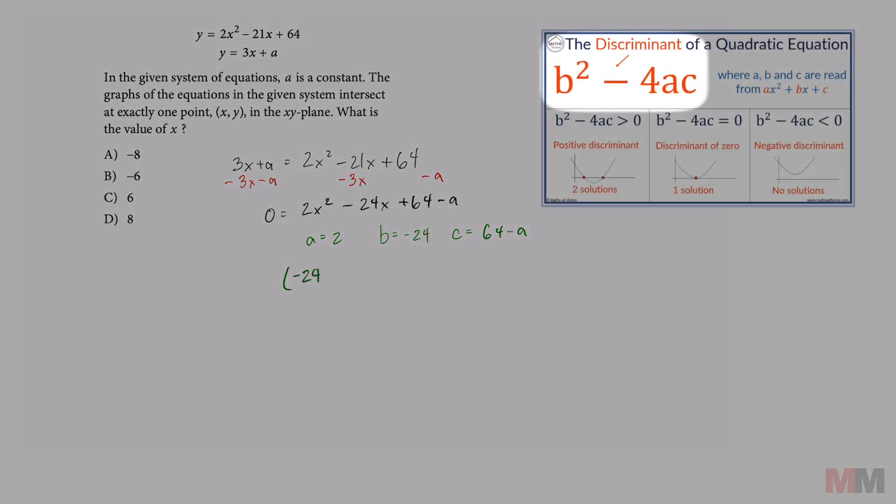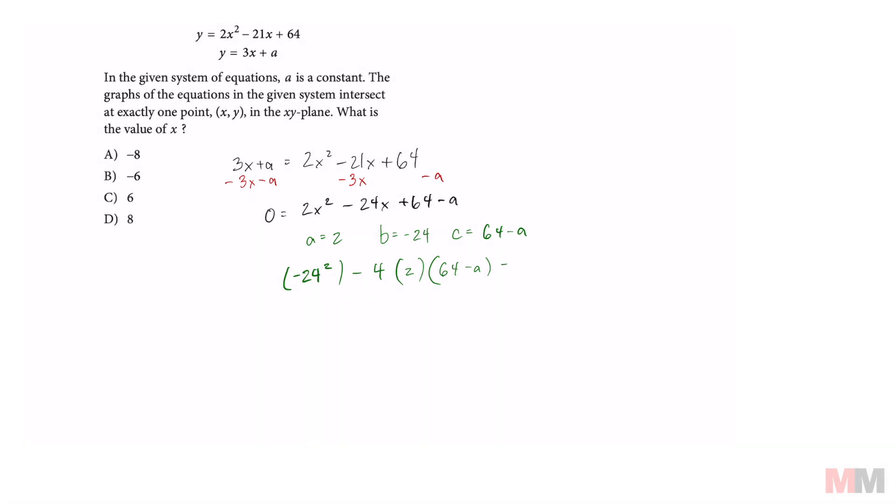Negative 24 squared minus 4 times my A value is 2. And remember that your C value is this expression right here, 64 minus A. And we're going to set that equal to 0. Simplifying that, we get 576 minus 8 times 64 minus A. And we can simplify further. And we're going to go ahead and solve for A. In the end, we end up getting A equals negative 8.